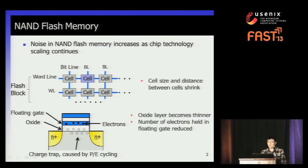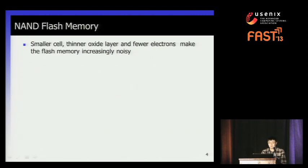With today's technology scaling down, the cell size and distance between cells shrinks, and the oxide layer becomes thinner and thinner. Besides, the number of electrons that can be held in the floating gate also reduces. So all these factors make the flash memory increasingly noisy.